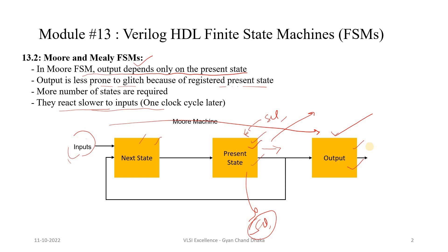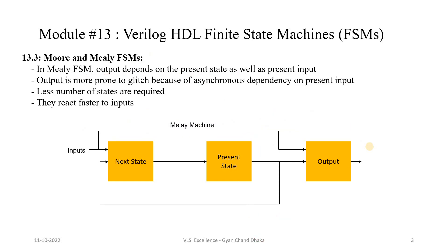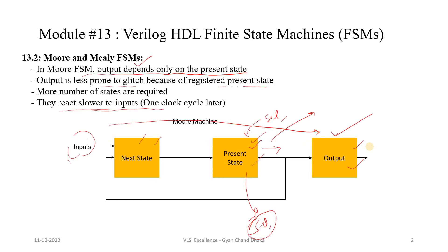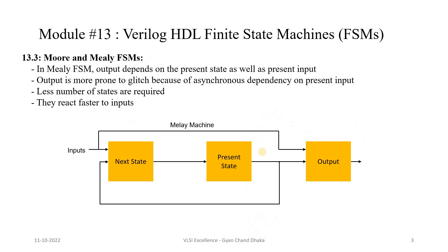You will understand this in more detail when we do a comparative study of Moore and Mealy FSMs. In the Mealy type FSM, the only difference is that the output depends on the present state as well as the current inputs — unlike the Moore FSM where the output depends only on the present state. Since inputs are asynchronous in nature and can come at any time, there are more chances of glitches in the output logic of the Mealy FSM. The number of states required to implement a Mealy FSM is less compared to a Moore FSM.